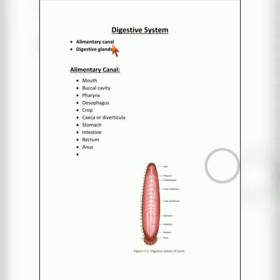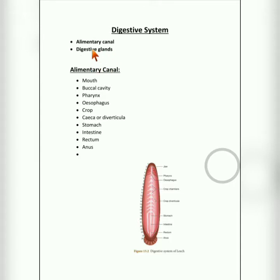The digestive system can be divided into two parts. The first one is the alimentary canal, and the second one is the digestive glands. The alimentary canal is the passage through which food passes, and there are some associated glands which help in digestion — because they secrete digestive enzymes.